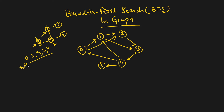In DFS, which is Depth First Search, we go to the depth first. So if we start from 0, we go to 1, then keep going to 2. When we cannot go further, we come back and visit 3 and 4. So DFS gives us 0, 1, 2, 3, 4.